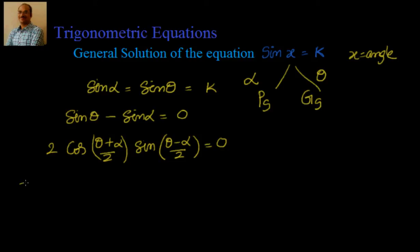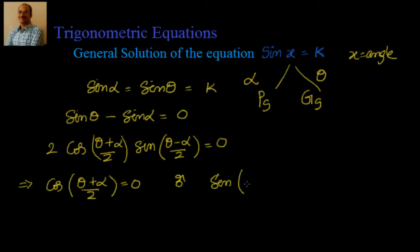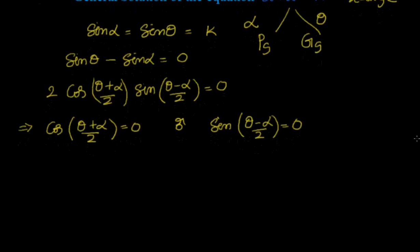For this product to equal zero, either cos((θ+α)/2) = 0 or sin((θ−α)/2) = 0. For the cosine case, we know from the last video that the general solution of cos x = 0 is x = (2n+1)·π/2.